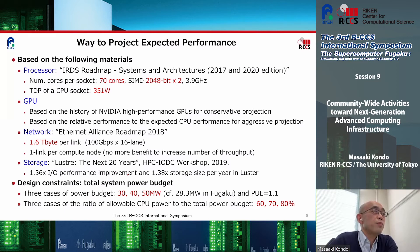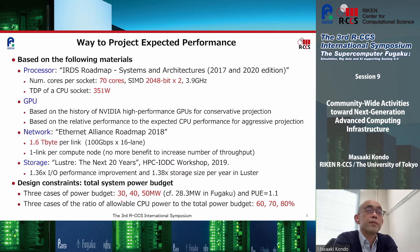An important design constraint is total system power budget. We assume three cases of total system power budget — 30, 40, and 50 MW — with a PUE of 1.1. We also assume three cases of the ratio of allowable CPU power budget to total power budget: 60%, 70%, and 80%.